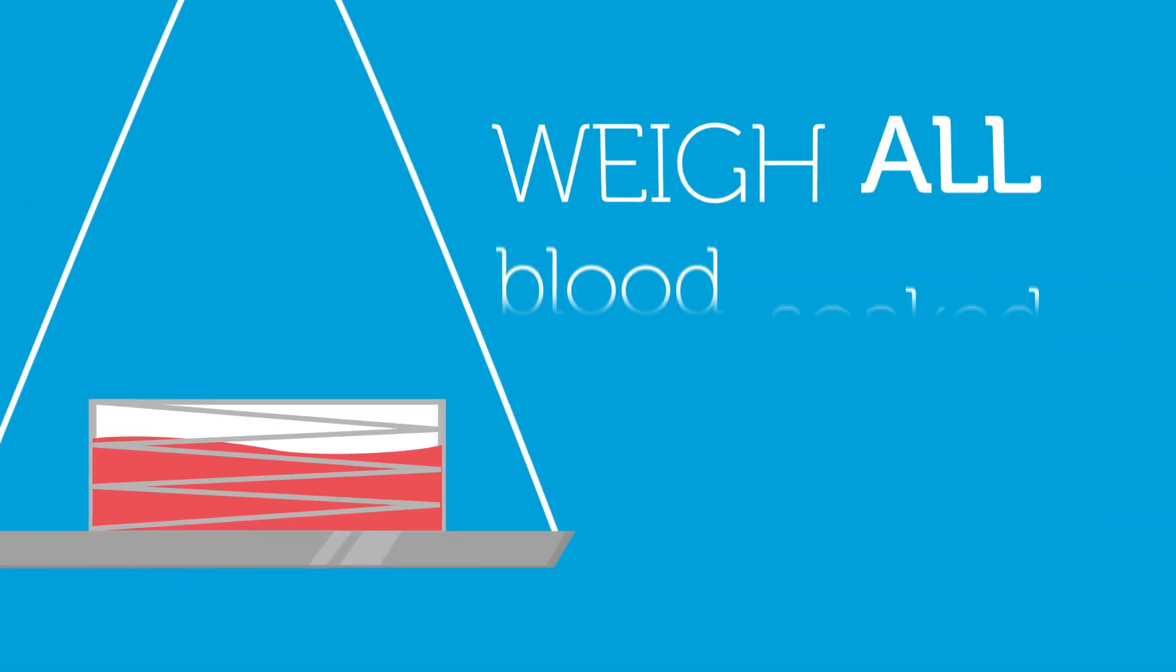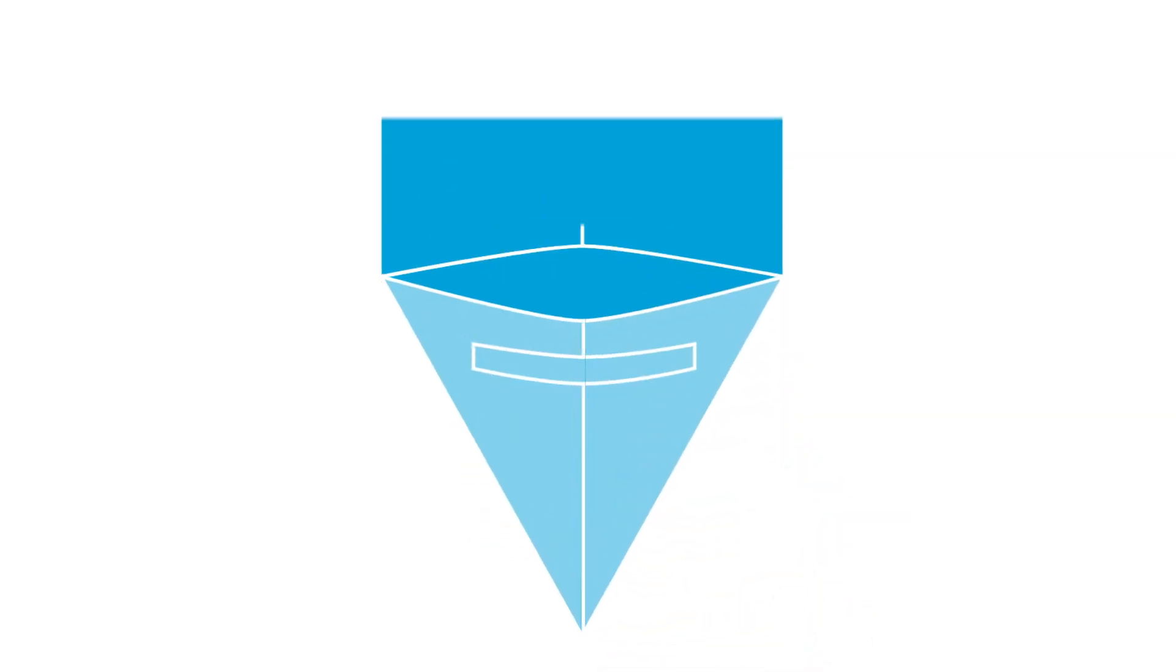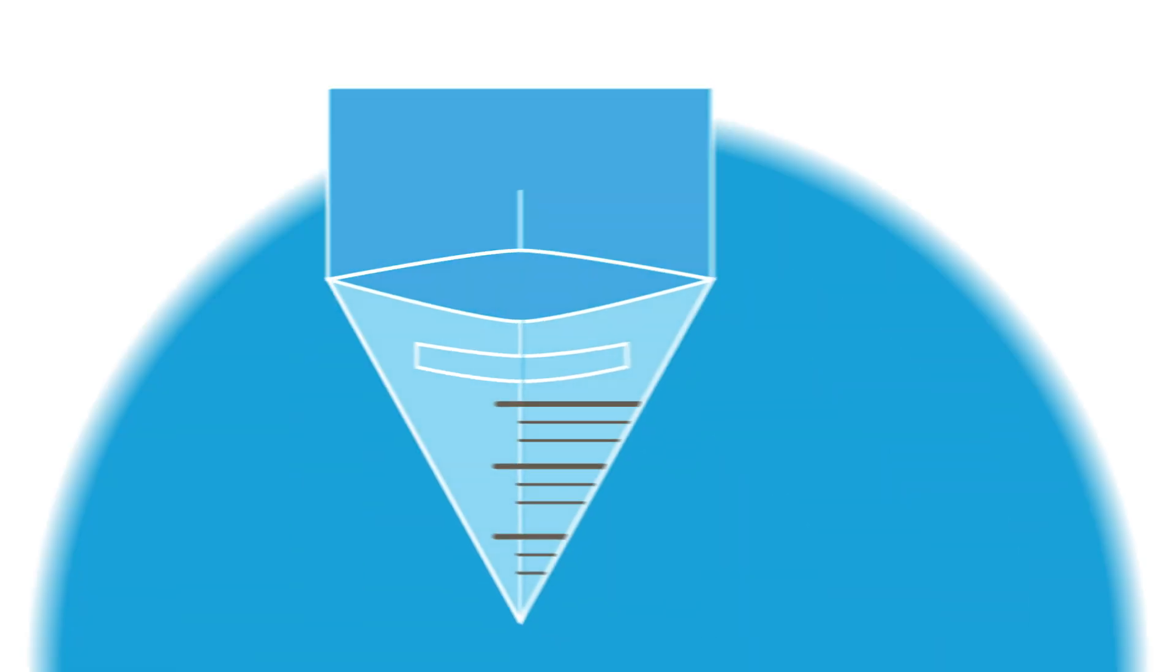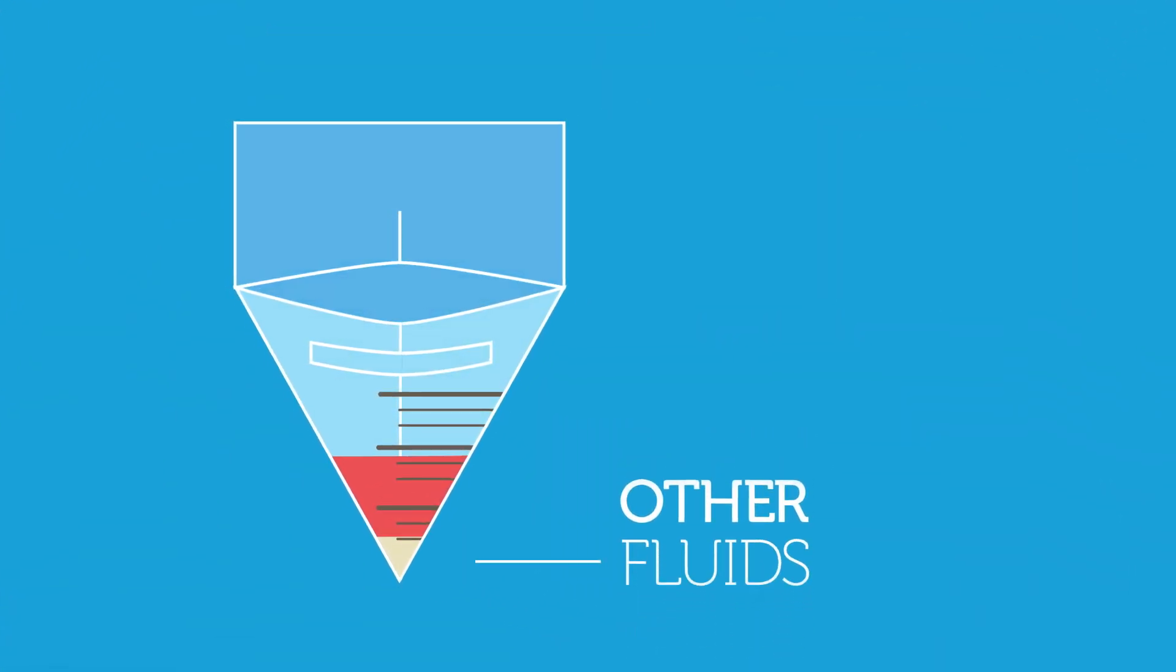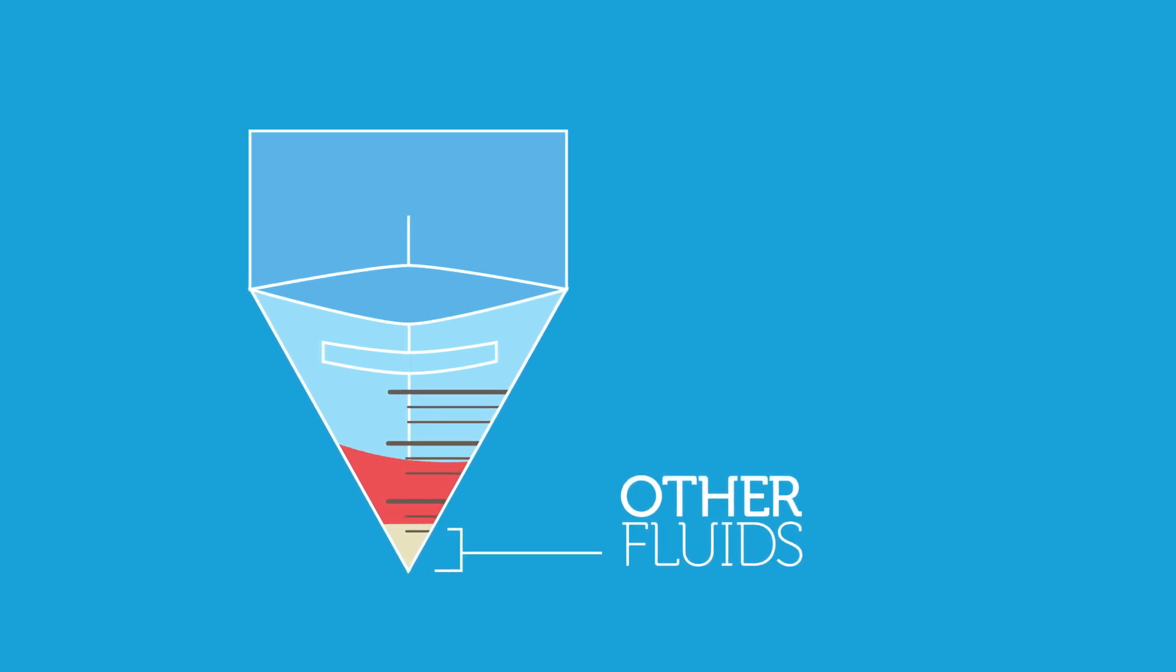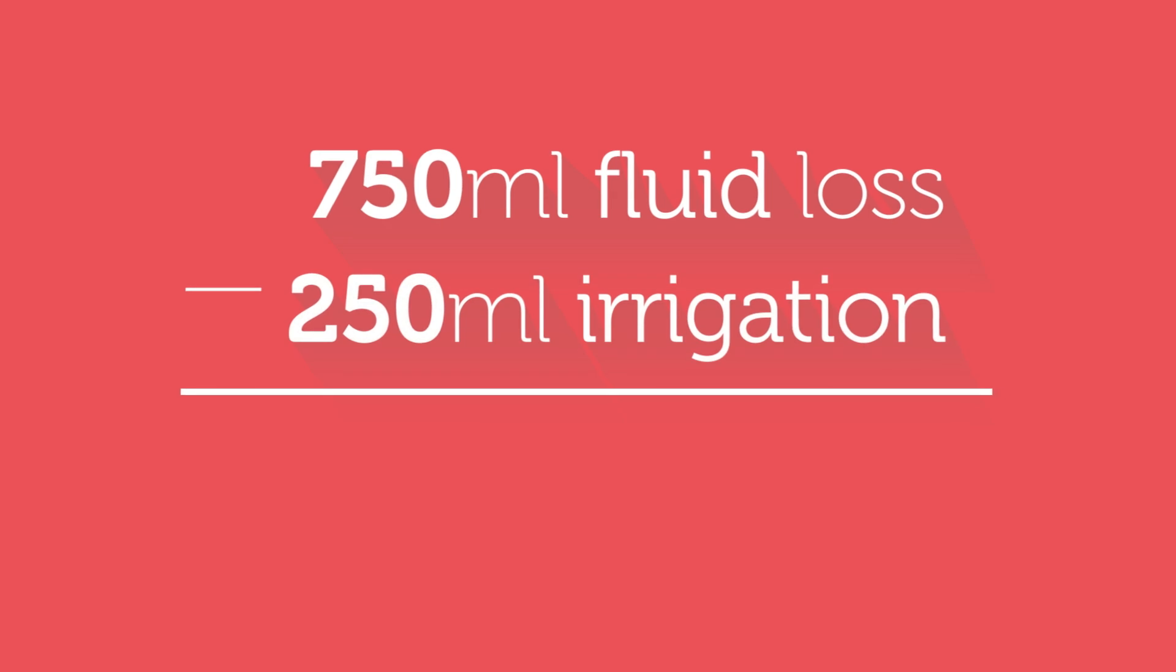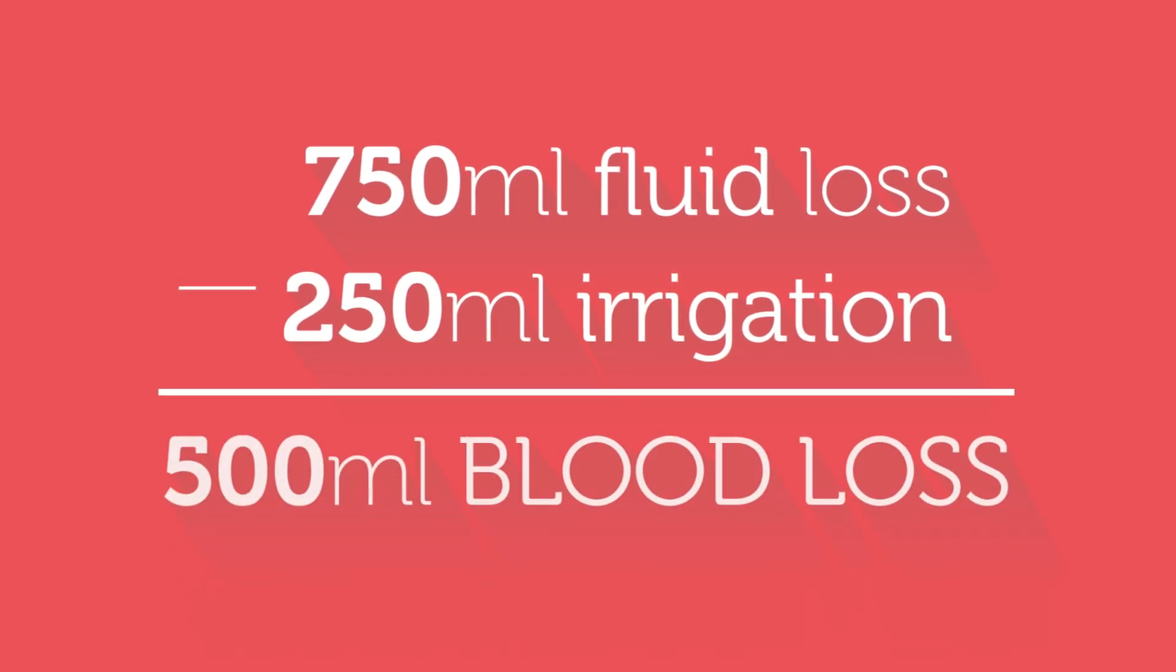Make sure you weigh all blood-soaked materials and clots. Now let's talk about measuring blood loss using containers. Measure using graduated or calibrated suction containers and under-buttock drapes with calibrated pouches. Remember to subtract other fluids such as amniotic fluid or urine. For example, the under-buttock drape equals 750 milliliters minus 250 milliliters irrigation equals 500 milliliters blood.